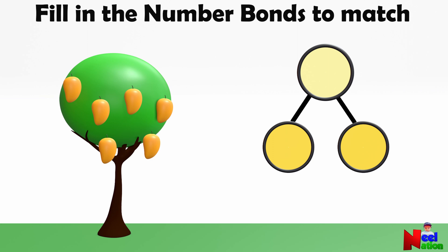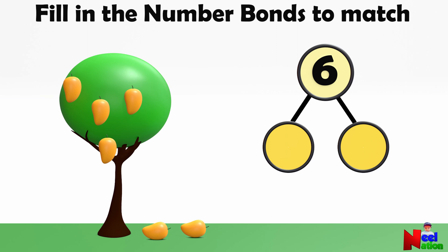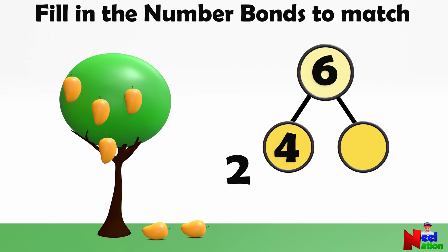Here you have a mango tree and some mangoes. How many mangoes are there? Six — right! Look carefully, some mangoes fell off to the ground. How many mangoes are on the ground? Two. How many are on the tree? Four. Can you fill in the number bonds to match? So here we decomposed six into four and two.